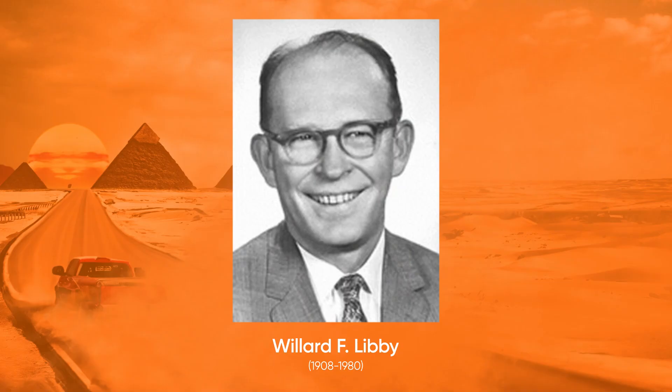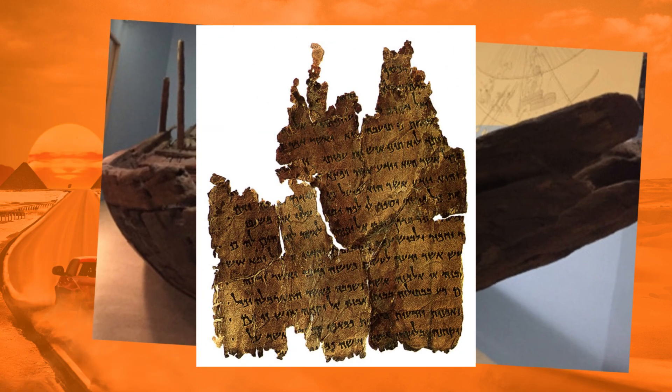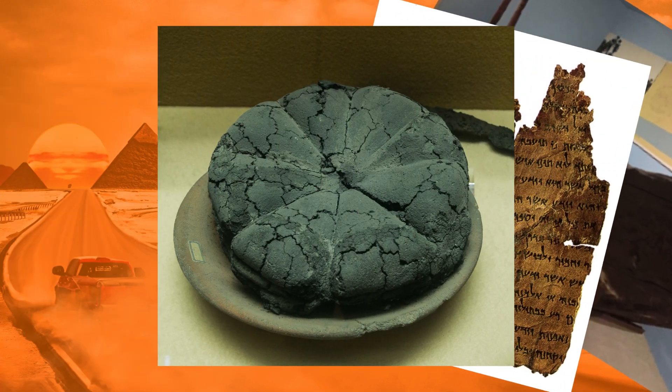This novel method was first published in 1949 by University of Chicago chemist Willard Libby. He was an alumnus of the Manhattan Project, so he definitely knew a thing or two about radioactivity. Libby tested this new methodology on archaeological samples of known provenance — meaning stuff he already knew how old it was. Some of them are things we've already discussed on this channel: an Egyptian funeral ship, a piece of the Dead Sea Scrolls, and a piece of charred bread recovered from the ruins of Pompeii. And it was a match.